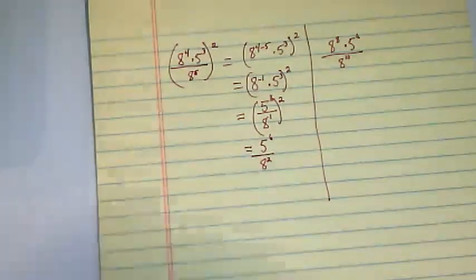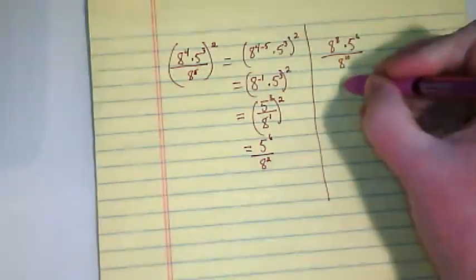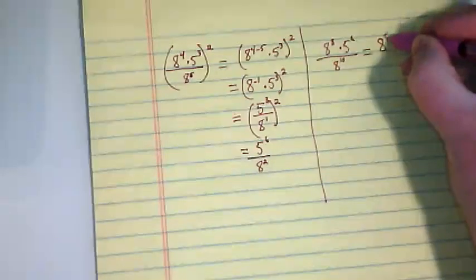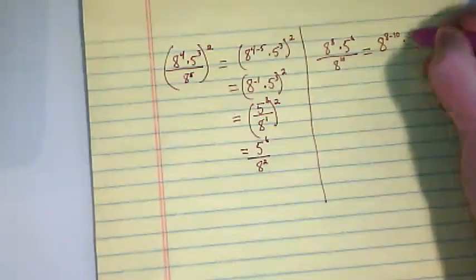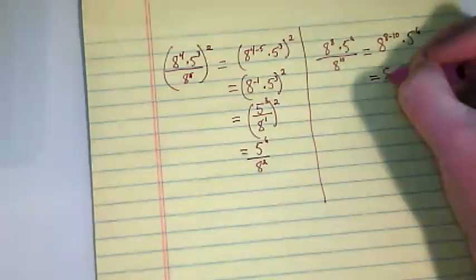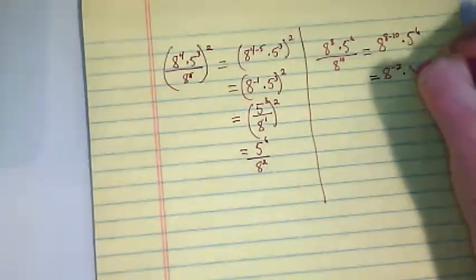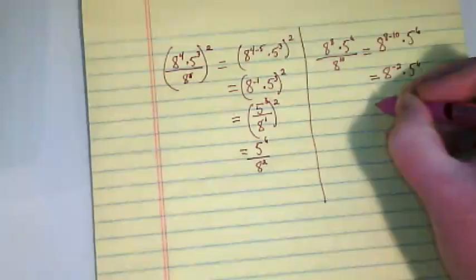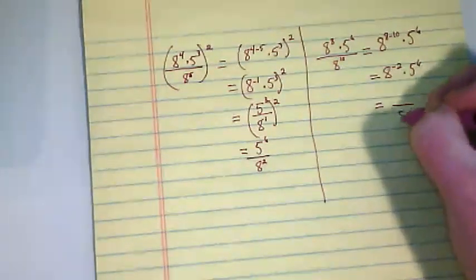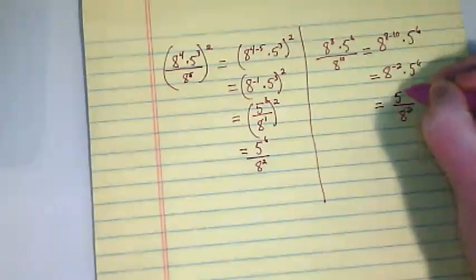The next step then would be to deal with the base of eight: eight to the eight minus ten times five to the sixth. We end up with eight to the negative two times five to the sixth, and because that's a negative exponent, it's going to go in the denominator, and we end up with five to the sixth power over eight squared.